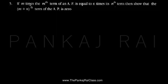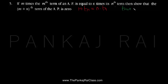We have been given m times the mth term, so m into Tm is equal to n times its nth term, which is n into Tn. What we have to prove is that the (m+n)th term, that is T(m+n), is actually equal to zero.